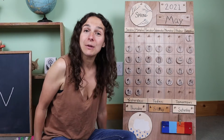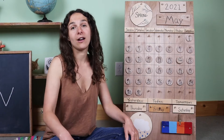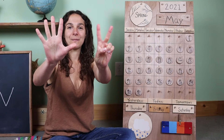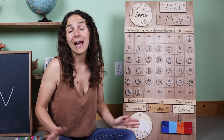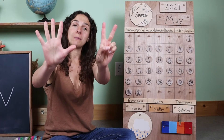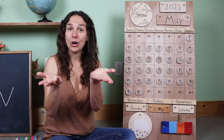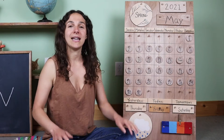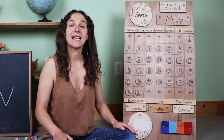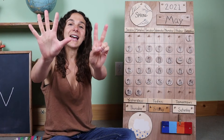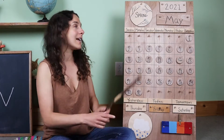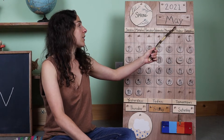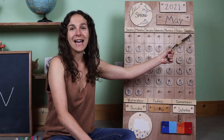And now it's time to move on to the days of the week song. Can you show me seven fingers like this? Because we have seven days in our week, we hold up seven fingers for the next song. Will you sing along with me? There are seven days, there are seven days, there are seven days in a week. Sunday, Monday, Tuesday, Wednesday, Thursday, Friday, Saturday.